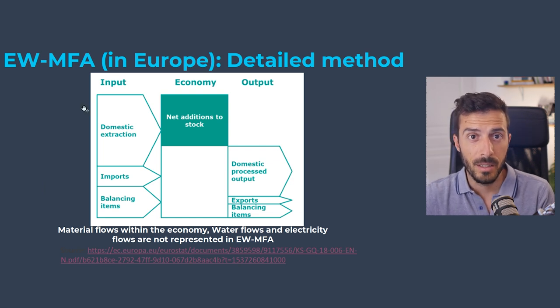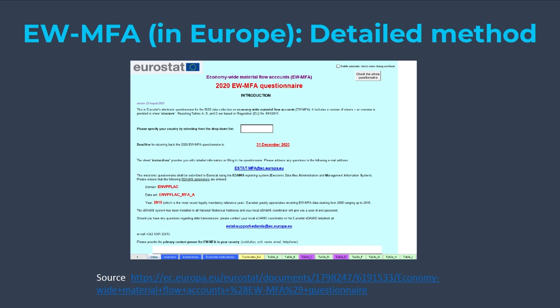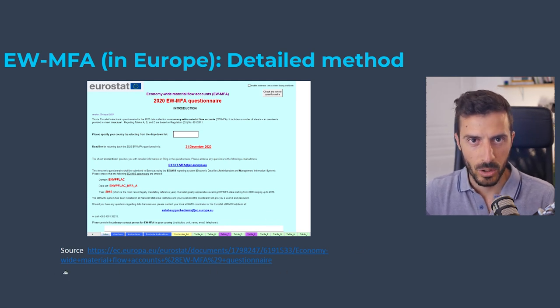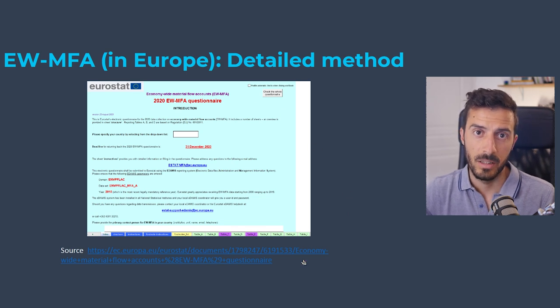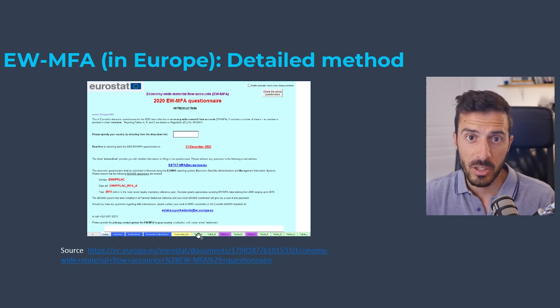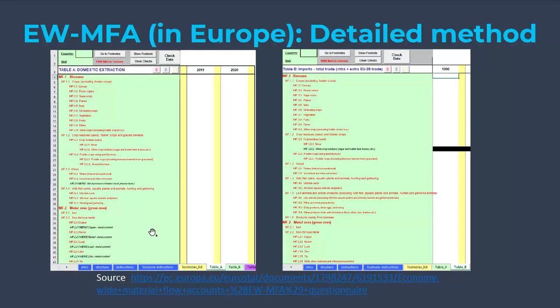Once we have this schematic overview, the idea is to put numbers behind these flows. Eurostat has developed a questionnaire — like a ledger — that enables you to record what enters, is extracted, is imported, exported, and wasted from your economy. If you download this Excel file, you'll see it explains the whole process and contains tabs like Table A and Table B. Table A covers domestic extraction, and the four main categories are biomass, metallic minerals, non-metallic minerals, and fossil fuels.